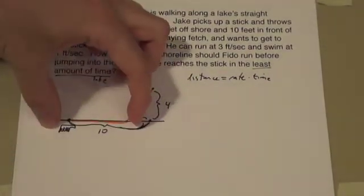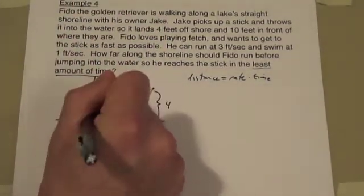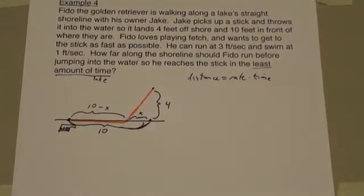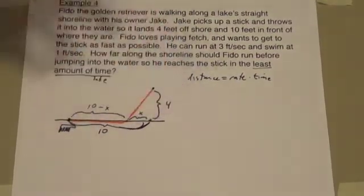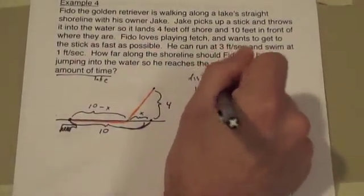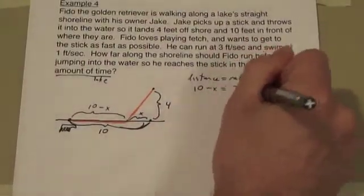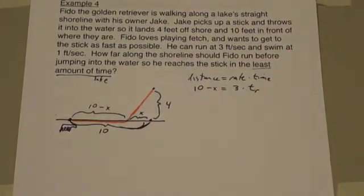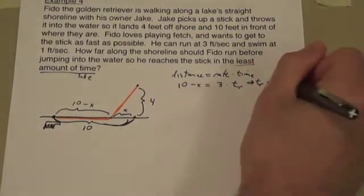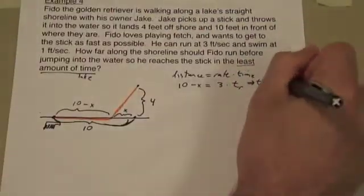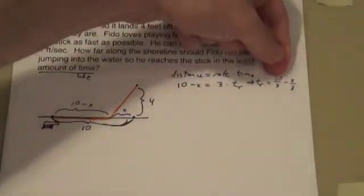So let's talk about the amount of time he runs. The distance that he runs, which is this length, is ten minus x because this plus the x has to equal ten so it must be ten minus x. So ten minus x equals the rate of running, three feet per second, times the time he spends running. That would mean that the time he spends running is, if you divide both sides by three, ten over three minus x over three. So we have that base of information.